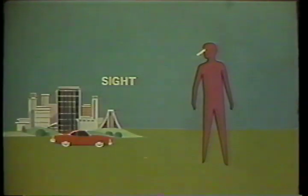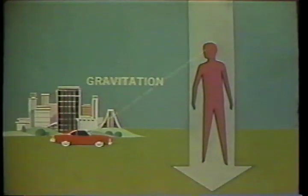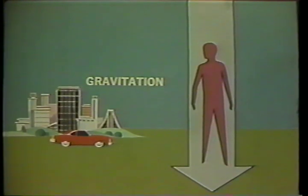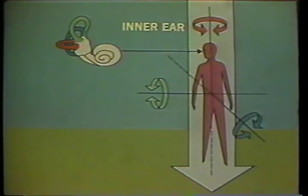Trouble really begins when there are no visual references. When we're on the ground, the combined input from several senses tells us which way is up. Sight gives us a frame of reference — we can see where we are in relation to fixed objects. Feeling gravity's pull on our muscles and joints tells us which way is down, and special parts of our inner ear help give us our sense of balance and orientation.